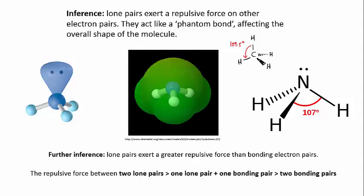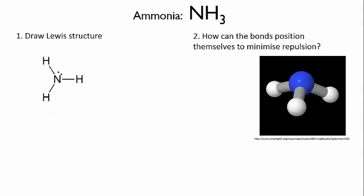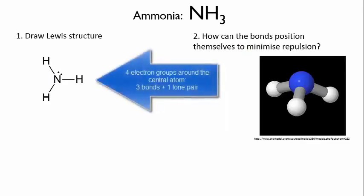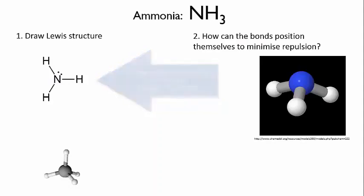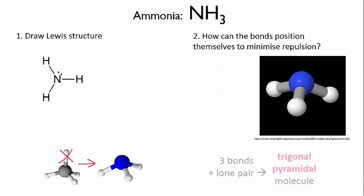So ammonia, with four electron groups around the central atom, is based on a tetrahedral geometry. But one of the groups is a lone pair, so it doesn't show up in the final molecular shape, which leaves us with a sort of truncated tetrahedron, which we call a trigonal pyramidal molecule.